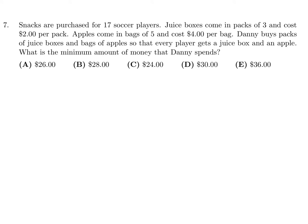Snacks are purchased for 17 soccer players. Juice boxes come in packs of 3 and cost $2 per pack. Apples come in bags of 5 and cost $4 per bag. Danny buys packs of juice boxes and bags of apples so that every player gets a juice box and an apple. What is the minimum amount of money that Danny spends?